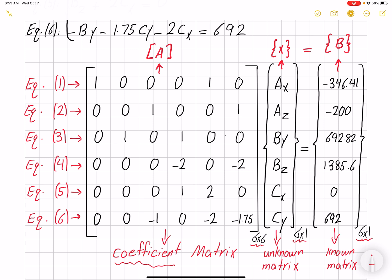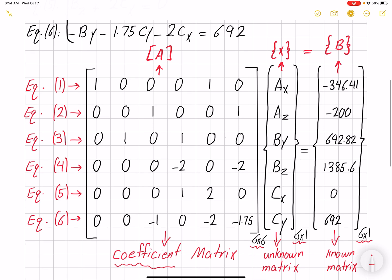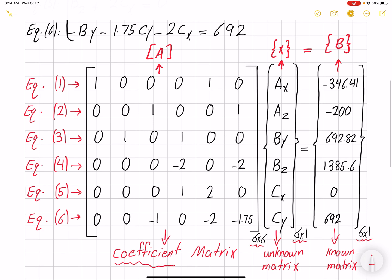Let's look at the last equation and do the last equation as an example. For the last equation, Ax: the equation doesn't have any Ax, so the coefficient for Ax would be zero. Az: the equation doesn't have any Az either, so the corresponding coefficient for that unknown would be zero.